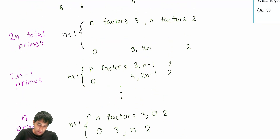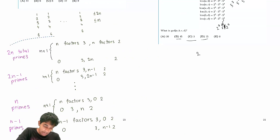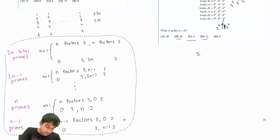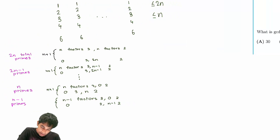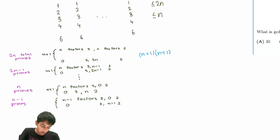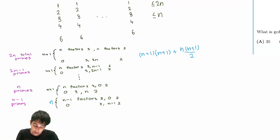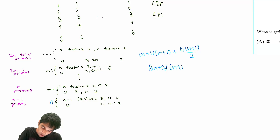So what is our total sum? For prime factor counts from n up to 2n, we have n+1 possibilities each time — that's (n+1) × (n+1) terms. Then for prime factor counts from 0 up to n−1, we add 1 + 2 + 3 + … + n, which equals n(n+1)/2. So the total is (n+1)² + n(n+1)/2 = (3n+2)(n+1)/2.